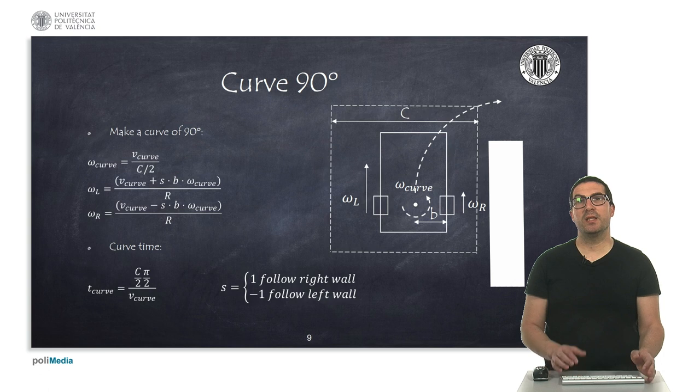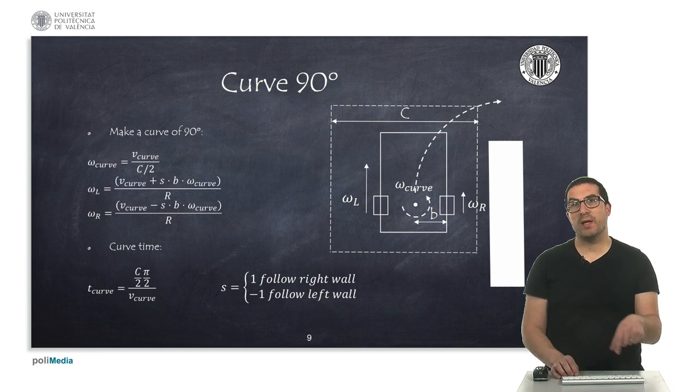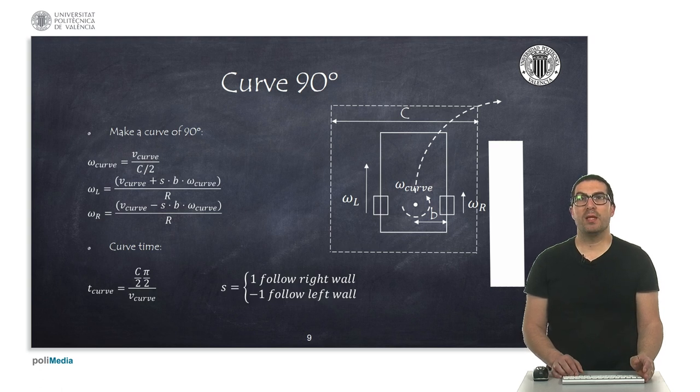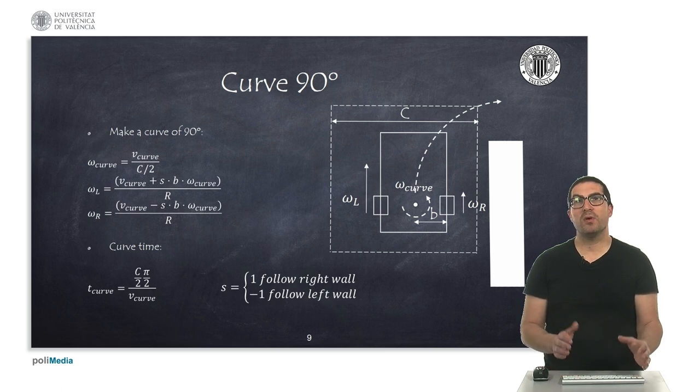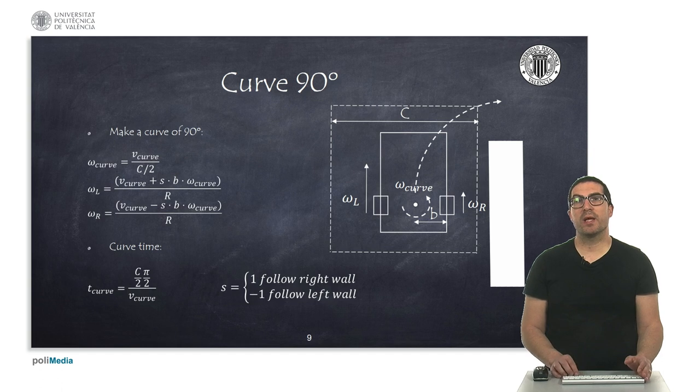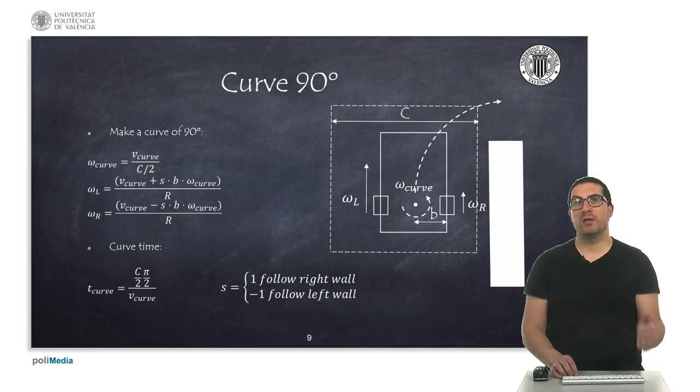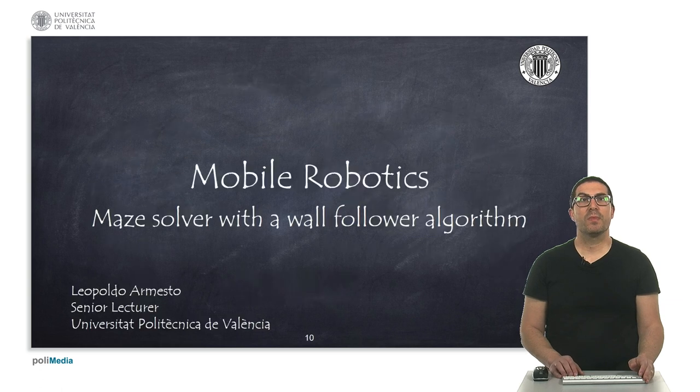In case of detecting the no wall condition, we must make a curve 90 degrees, trying to move to a top right or top left cell with respect to the robot orientation. We can compute or pre-compute the required angular velocities for the wheels using some straightforward kinematic relations. We can also compute the time we need to perform this curve, and this will depend on the velocity we want to perform the curve, some constructive parameters, and also on the cell size.